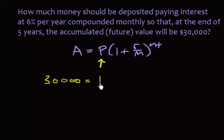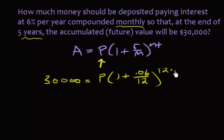I don't know the present value, but I do know the interest rate, which is 0.06. And I do know the number of times I compound in a year. Because it's monthly, it's 12, raised to the 12 times, the number of years is 5 years.